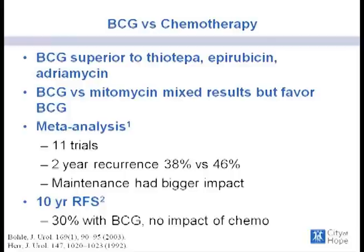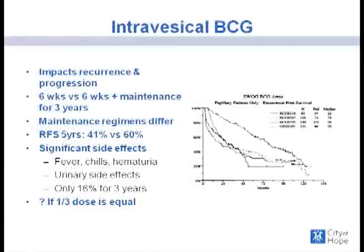Meta-analyses of randomized trials comparing BCG with all intravesical agents show a trend that BCG is better not only in reducing recurrence rate but also in impacting progression. A 10-year trial by Harry Herb from Memorial showed recurrence-free survival rates of 30% with intravesical BCG given with a maintenance regimen, with no comparable impact from intravesical chemotherapy. For optimal efficacy, BCG should be given with a maintenance schedule — at least one year of maintenance BCG is required to show superiority over mitomycin in preventing recurrence and progression.